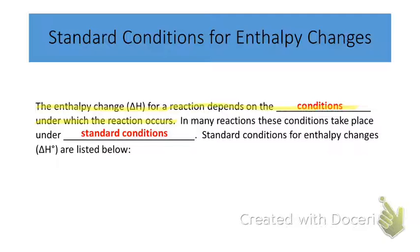For instance, if the temperature, pressure, or the concentrations of solutions all change or vary, then it's going to affect the delta H value — the amount of potential energy change that occurs for a system. So often we need to state what conditions the reaction is occurring at. We have special conditions that are known as standard conditions.